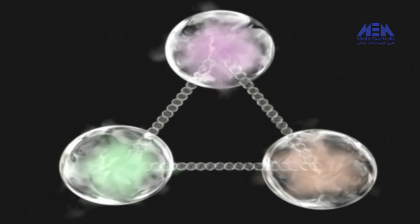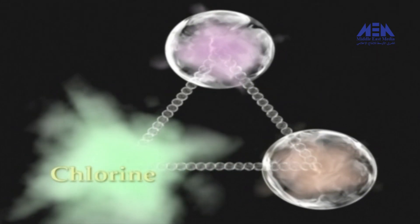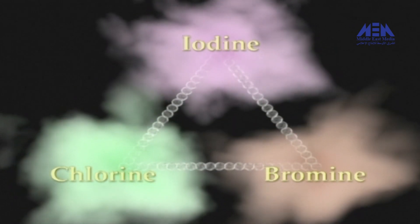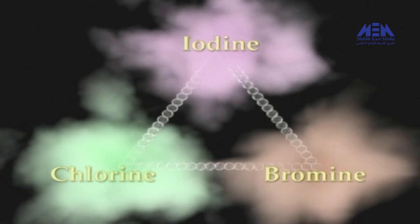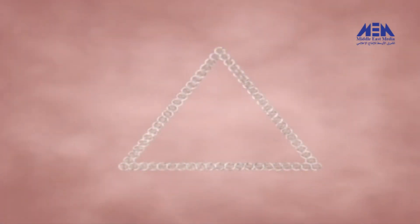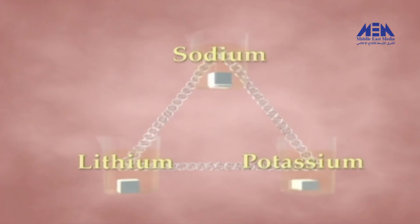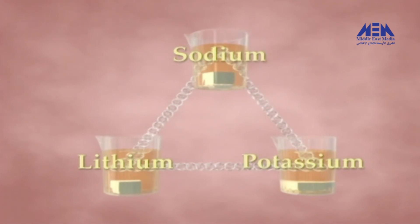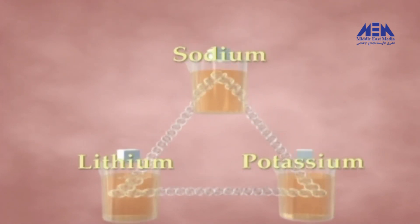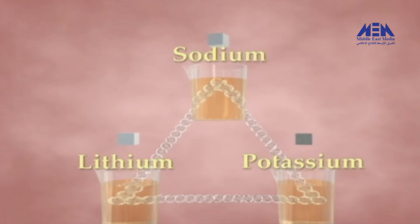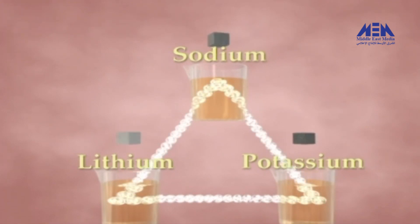The triad of gases — chlorine, bromine, and iodine — for example, are all colored gases and all highly reactive. And then there's the triad of soft silvery metals: lithium, sodium, and potassium, so reactive that they need to be stored in inert gases or kerosene, and which tarnish rapidly in air. Triads were a later and unsuccessful idea for organizing elements.